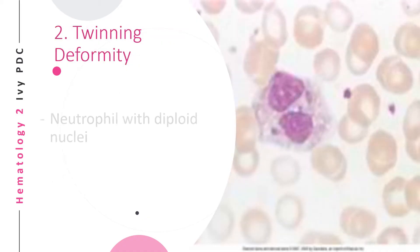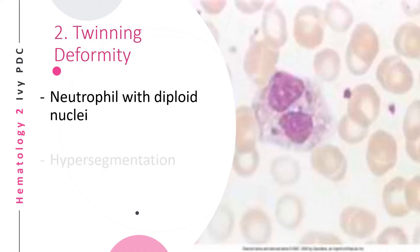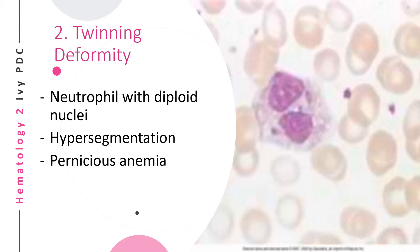The second anomaly is the twinning deformity, where the neutrophil has diploid nuclei — one nucleus and another nucleus. This is considered a hypersegmentation of a neutrophil and may also be seen in pernicious anemia.